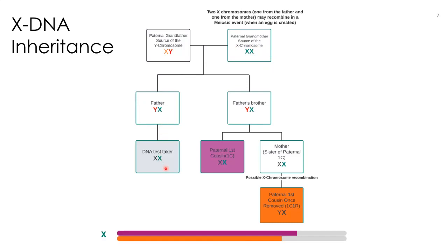These sons in turn pass the X they received from their mother on to their children. This daughter received an X from her father that was exactly the same as what he received from his mother. This brother also received an X and passed it on to his daughters, and this daughter had two X chromosomes that recombined and then passed it on to her son. So you can see that not the full amount was shared — there was a small segment of DNA that had been recombined and was not fully shared with the DNA test taker being compared.